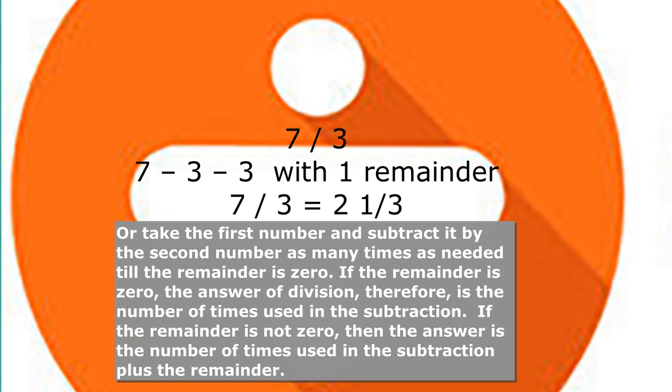If the remainder is not zero, then the answer is the number of times used in the subtraction, plus the remainder.